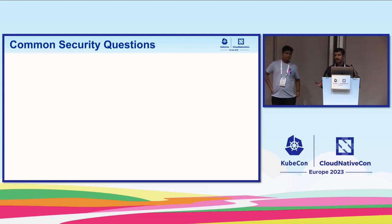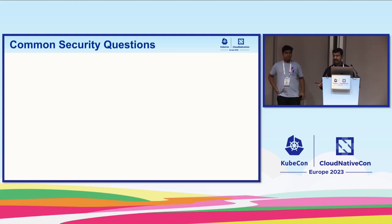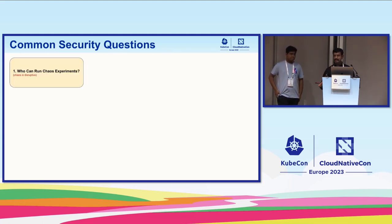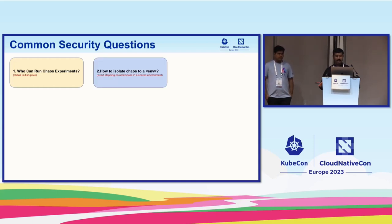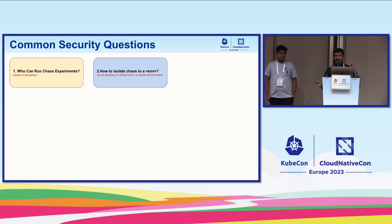So that's a bit of introduction to chaos engineering and Litmus itself. Now let me talk about: if you are going ahead and implementing chaos, what are the common security questions or challenges you generally face? First is who can run chaos experiments — you need to integrate with your authentication systems or authorization systems in your organization. You want to give secure access to the control plane. The second challenge is you don't want to open up all your environments for chaos — you want to give certain environments to certain people and isolate namespaces separately for chaos engineering.